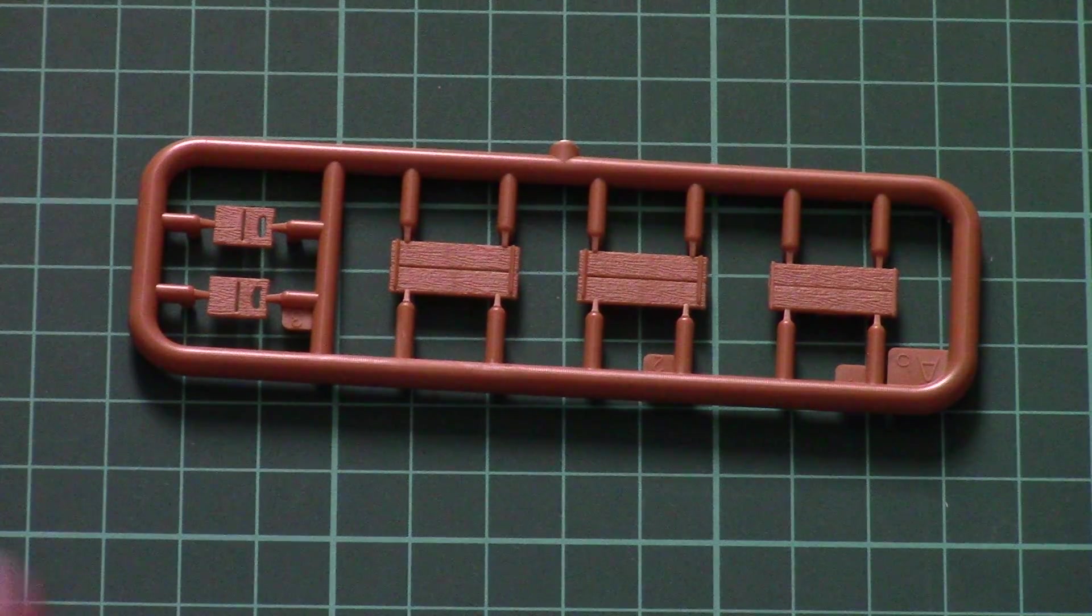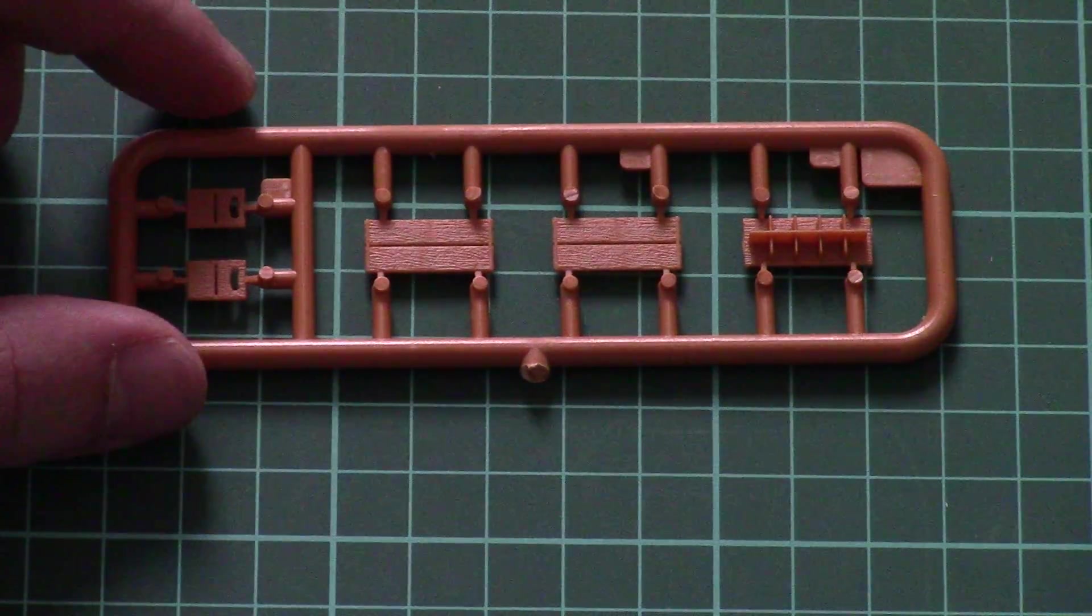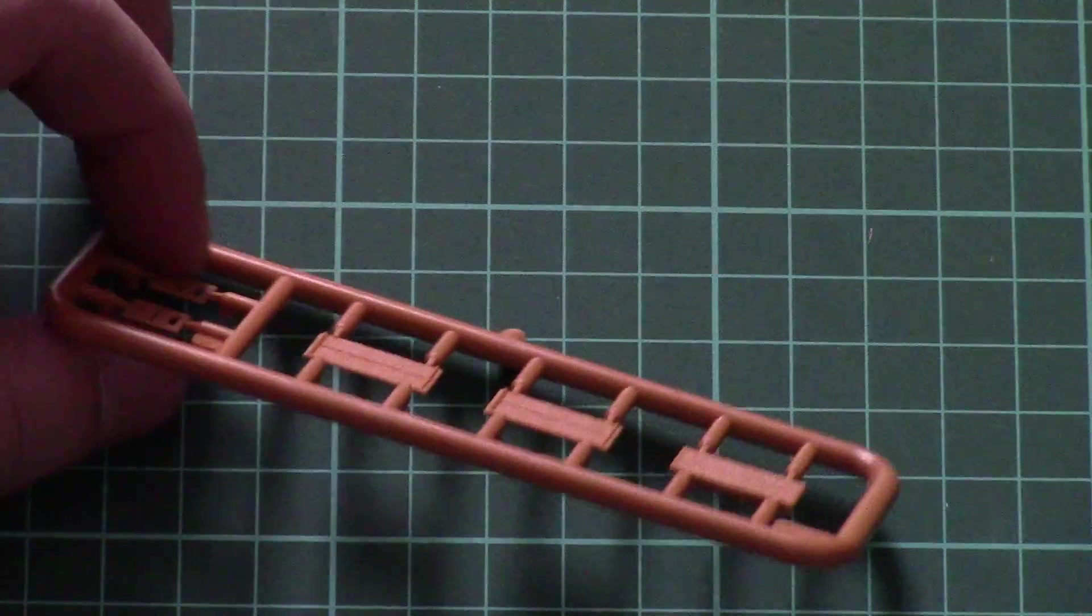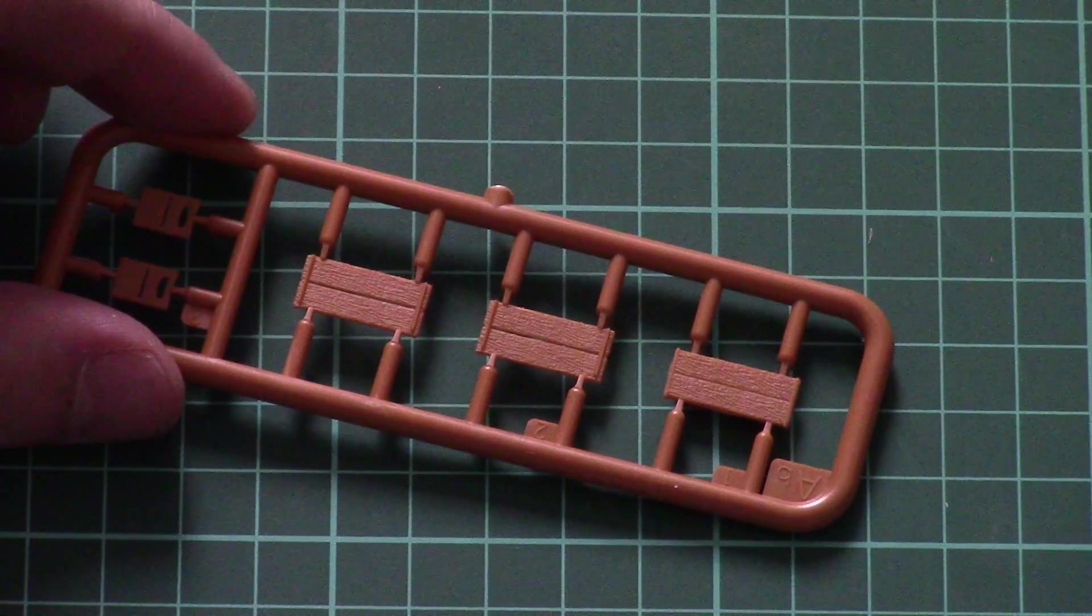Next we have the brown sprue for boxes. Assembly of the boxes should be quite easy and molding quality is also quite good, so no worries again. But you will have to paint those because otherwise they will look terrible - I mean, you see the color of the plastic.